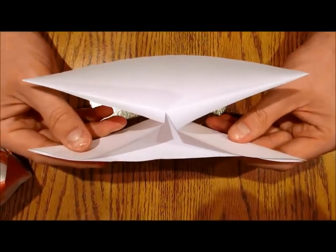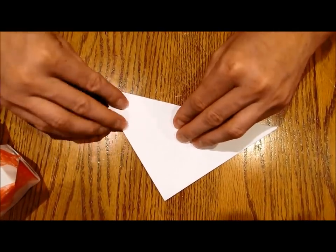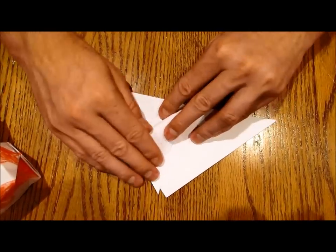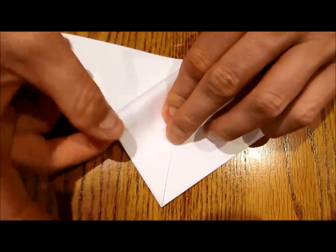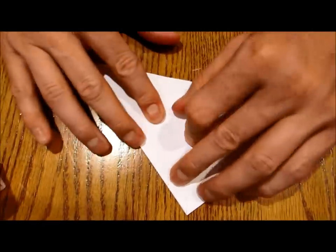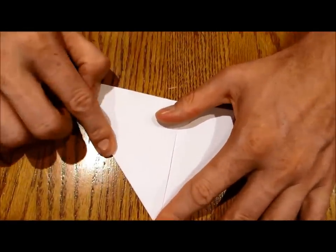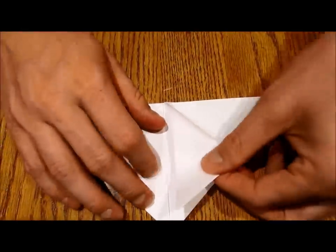Now the next part, you're just going to take each of the corners up to the top and get it nice and straight and fold it into a little triangle like that. Do that with all four corners.